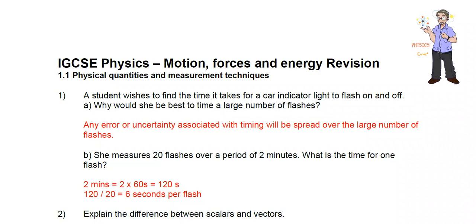She measures 20 flashes over a period of 2 minutes. What's the time for one flash or the duration between flashes? Well, 2 minutes is really 2 times 60 seconds, so we've got 120 seconds. 120 divided by 20 is 6 seconds per flash.